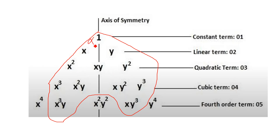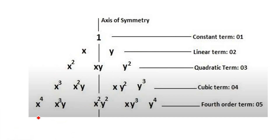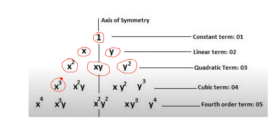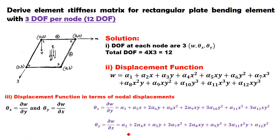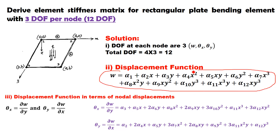Multiplying each term by generalized coordinates α1 through α12 gives the displacement function: W = α1 + α2·x + α3·y + α4·x² + α5·xy + α6·y² + α7·x³ + α8·x²y + α9·xy² + α10·y³ + α11·x³y + α12·xy³. This is the displacement function based on the Pascal triangle for a plate bending element with 12 DOF.